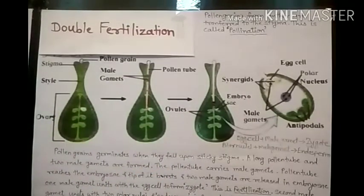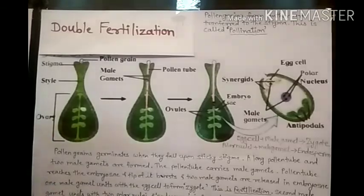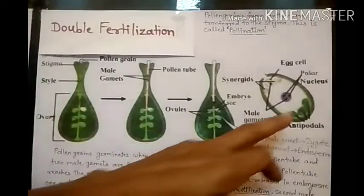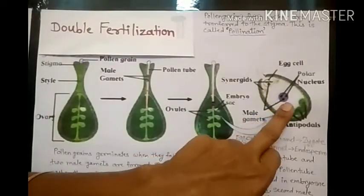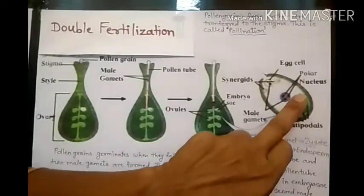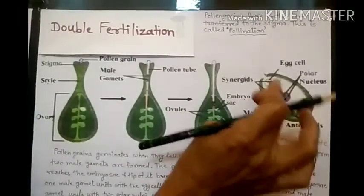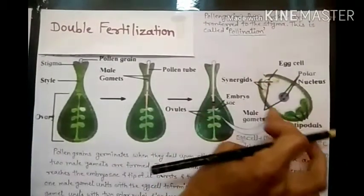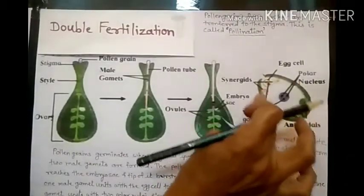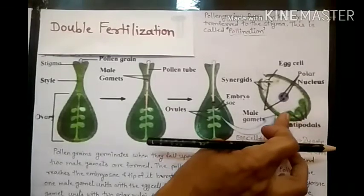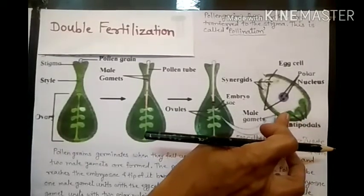Now we will see the next part. These ovules develop into seeds. The ovule contains the zygote and endosperm, and they develop into seeds.